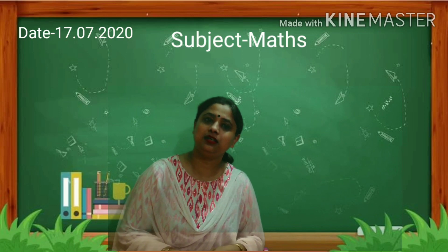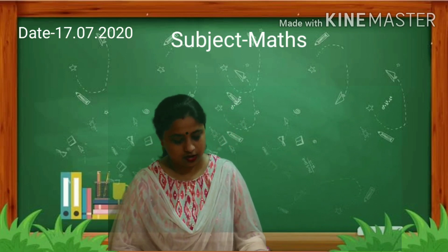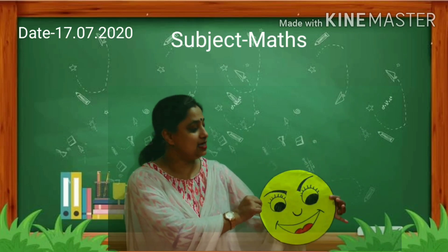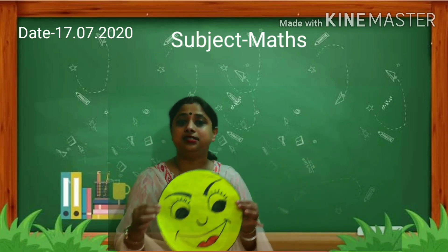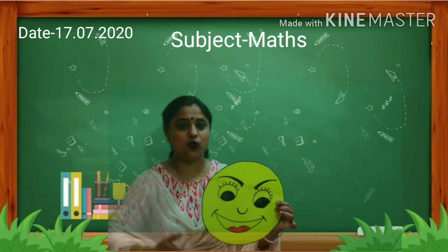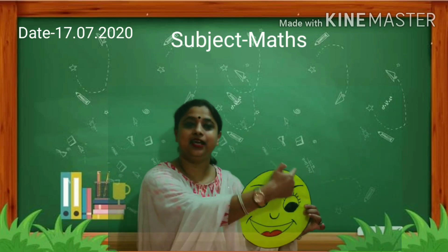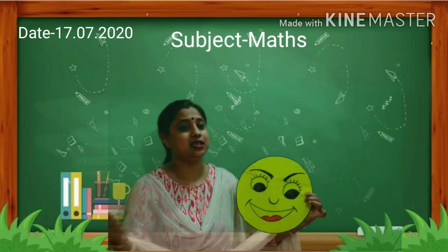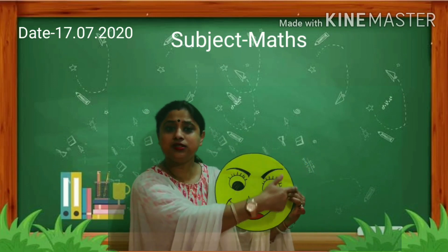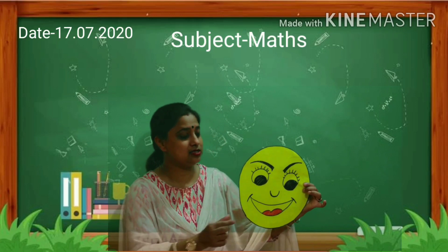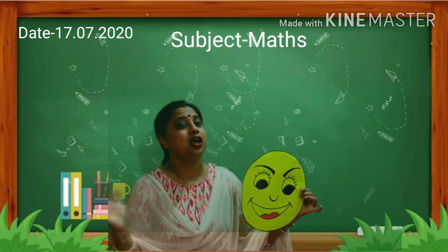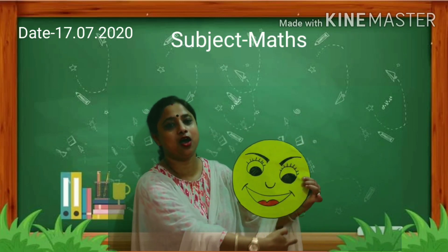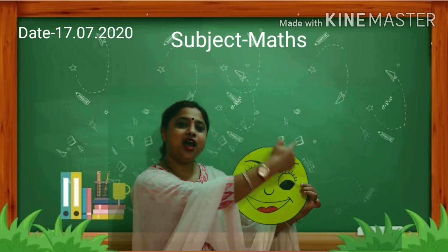Let's do a quick recap of the circle. What is this? This is a circle. The circle is round in shape. It has no sides and no corners.